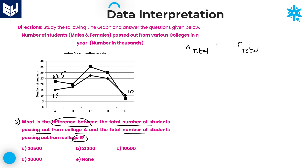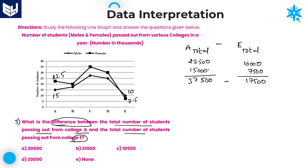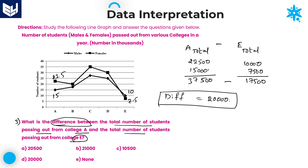College A total: 22,500 + 15,000 = 37,500. College E total: 10,000 + 7,500 = 17,500. The difference is 37,500 − 17,500 = 20,000. So the required difference between college A total and college E total is 20,000, which is option D.